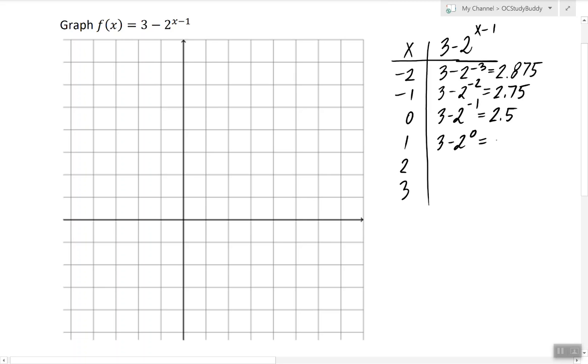And so on. Now when x equals 1 we have 3 minus 2 to the power of 0, which is 2. At 2 it is equal to 1, at 3 it is equal to negative 1. We can find a couple more points. At 4 it is negative 5.